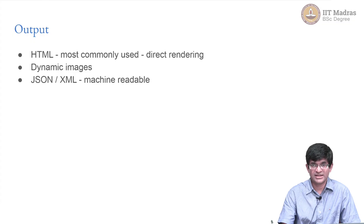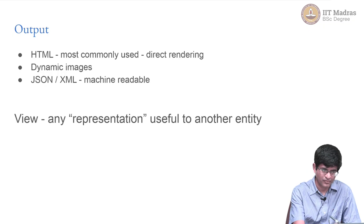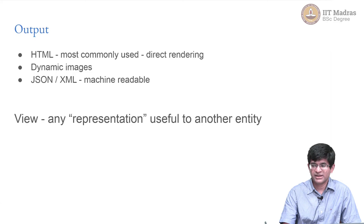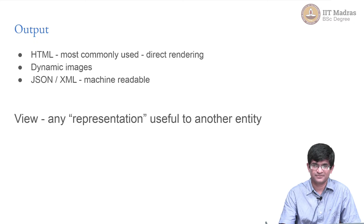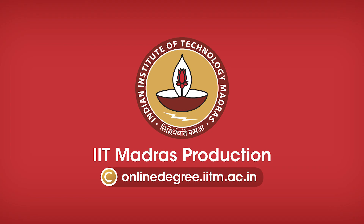Yet another example could be JSON or XML, which is purely machine readable — not meant for a human to directly interact with. But it is important because JSON output generated could be used by some other application for further processing. In other words, a view is any representation that is useful to another entity — it could be HTML, plain text, an image, or formatted structured data like JSON, useful to a human or to another machine. Any of those constitutes a view.